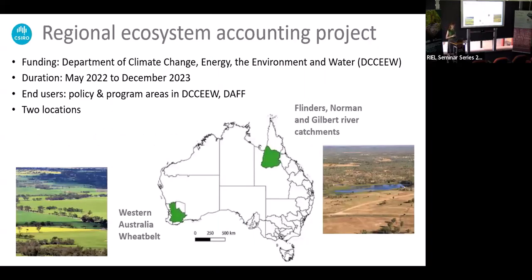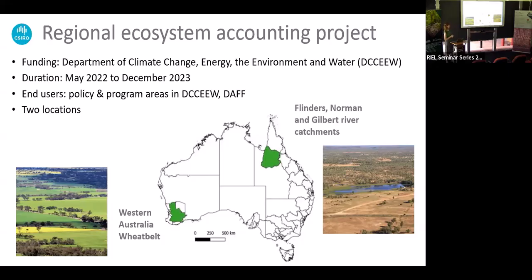The Regional Ecosystem Accounting Project ran from May 2022 to December 2023, in collaboration with the Department of Climate Change Energy, the Environment and Water. It was designed to develop ecosystem accounts that could meet end user needs — the policy and program areas in DCCEEW and the Department of Agriculture, Fisheries and Forestry. The project developed ecosystem accounts for two areas in Australia: the Western Australian Wheat Belt and the Flinders, Norman and Gilbert river catchments. There was also a sister project in the Murray-Darling Basin.